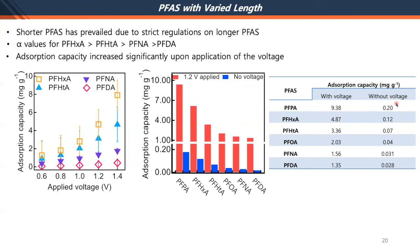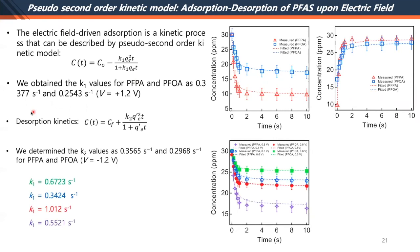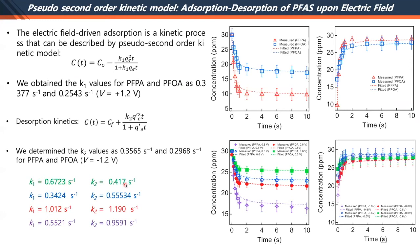We studied adsorption and desorption kinetics using our graphite electrode and found that the pseudo-second-order kinetic model fits the experimental data very well regardless of chain length. Both absorption (K1) and desorption (K2) rate constants follow second-order kinetics, and using these rate constants in the kinetic model produces good agreement with experimental results.